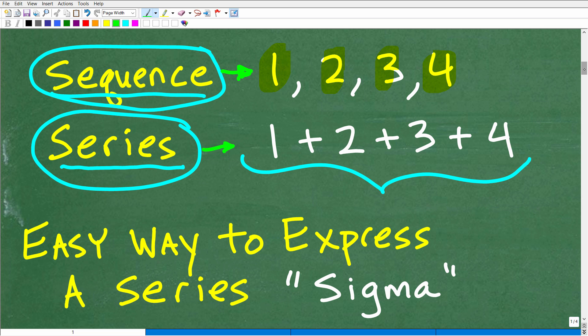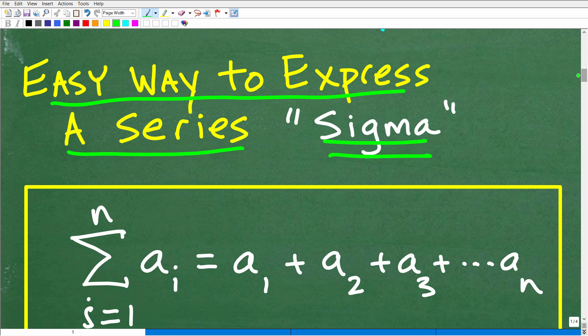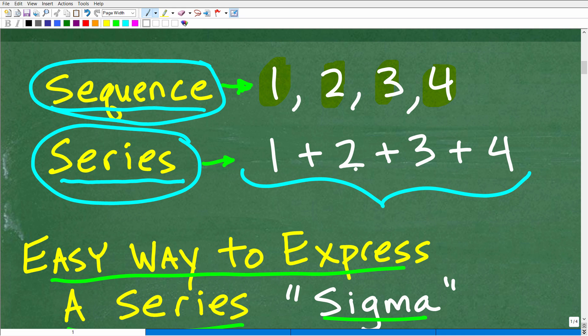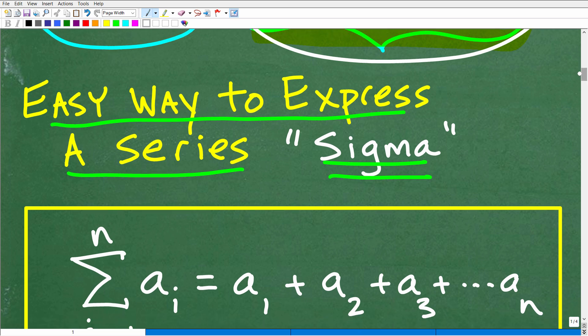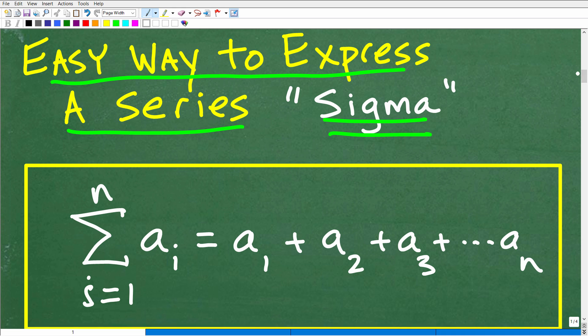But again, a sequence is something like 1, 2, 3, 4 - these are the terms of that sequence. A series is when we're adding up the terms of a sequence. So with that in mind, an easy way to express a series is using this sigma notation. That's what this is all about. In this particular series, we're adding up 1, 2, 3, and 4, which means we're finding the sum. We're going to find the entire sum of these numbers.